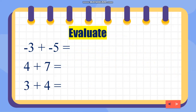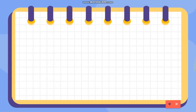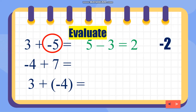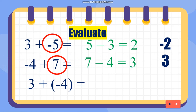Let's evaluate the following. Negative 3 plus negative 5: both signs are the same and negative, so 3 plus 5 is 8 — answer is negative 8. Next, 4 plus 7: both positive, so simply add — that is 11. And 3 plus 4 is equivalent to 7. Next, 3 plus negative 5: signs are different, so subtract — 5 minus 3 is 2. The larger number is 5 and it is negative, so the answer is negative 2. Next, negative 4 plus 7: signs are different, subtract 7 minus 4 is 3; the larger number is 7 and the sign is positive — answer is positive 3.